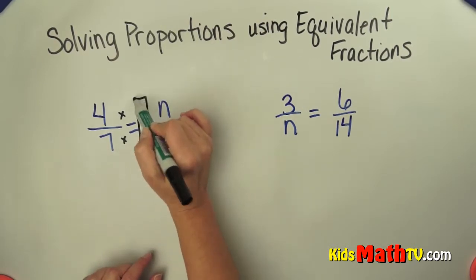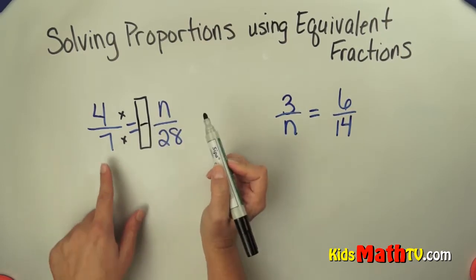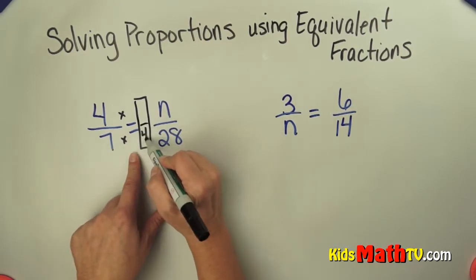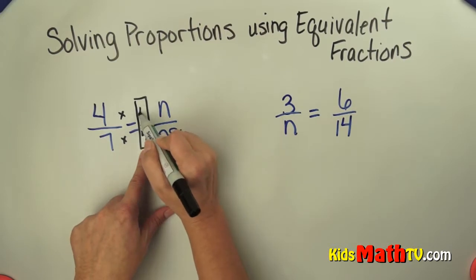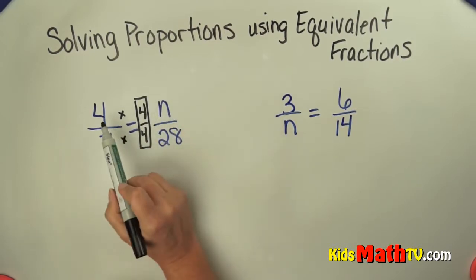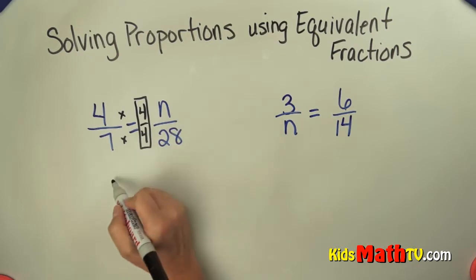I'm multiplying it by 1. I'm going to represent my 1 like that. I know 7 times 4 is 88, so my 1 is going to be 4/4. So 4 times 4 is 16.